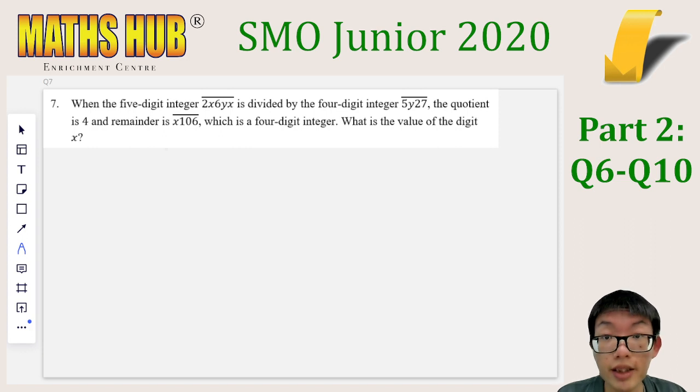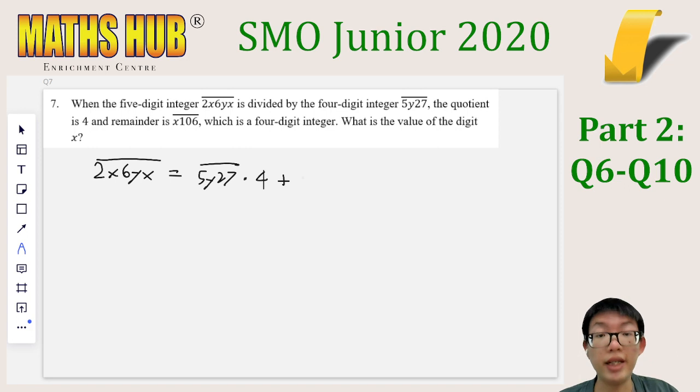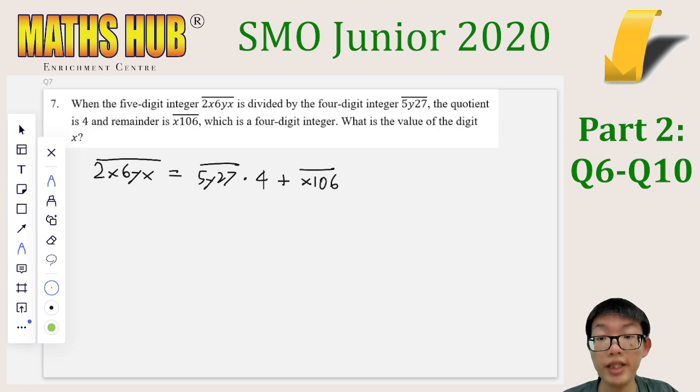In question 7, we have a statement about a division. A 5-digit number is divided by a 4-digit number, giving a quotient of 4 and a remainder of another 4-digit number. It is probably easier if we rewrite this as a multiplication instead. So 2x6yx, which is the dividend, is equal to the divisor 5y27, multiplied by the quotient 4, and plus the leftover remainder x106. We are asked to find the value of the digit x.